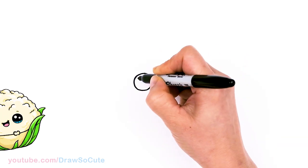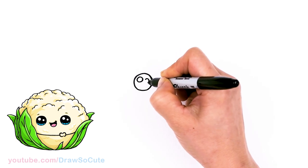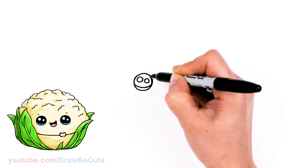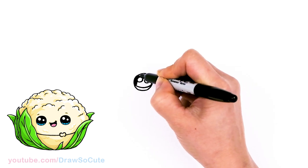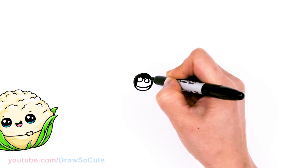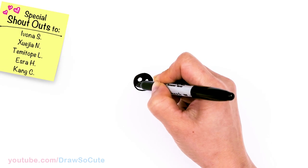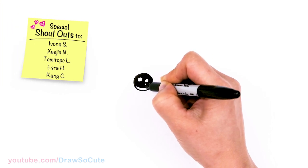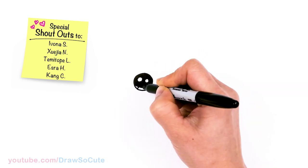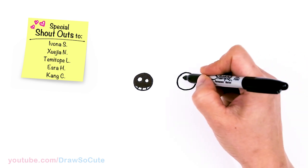And then let's go back in here and make them Draw So Cute eyes. So two small circles for highlights and a curved line at the bottom. Shade in the top and add lines at the bottom. Same thing over here.